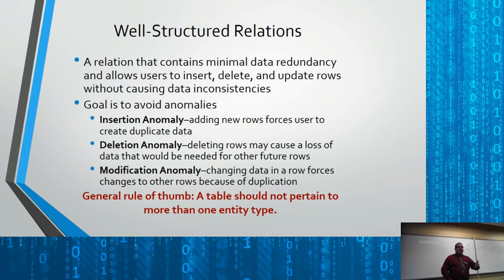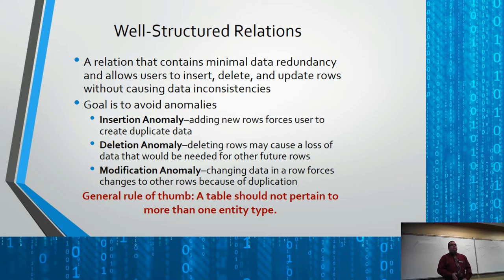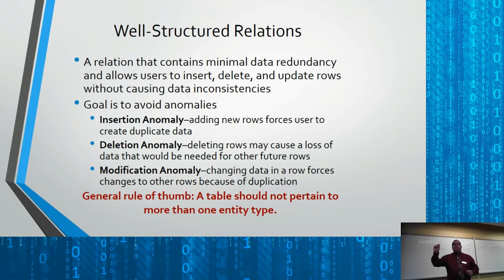An example is order status. We have a status called 'shipped' and hundreds or thousands of order lines containing the word 'shipped' as a value. If we need to change 'shipped' to 'dispatched,' instead of updating one value in one place, you end up updating maybe 10,000 rows of data.